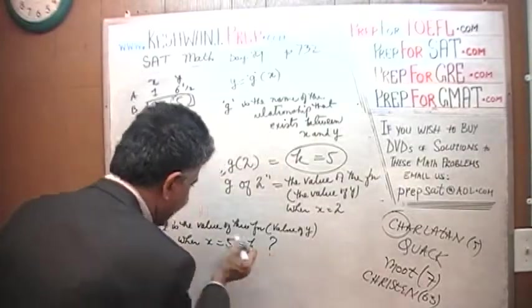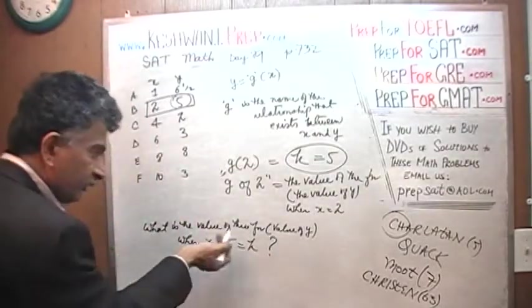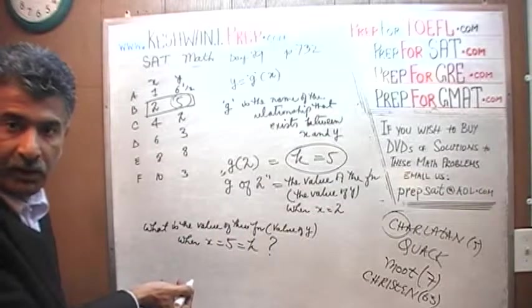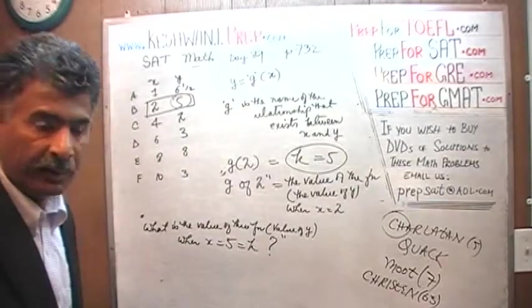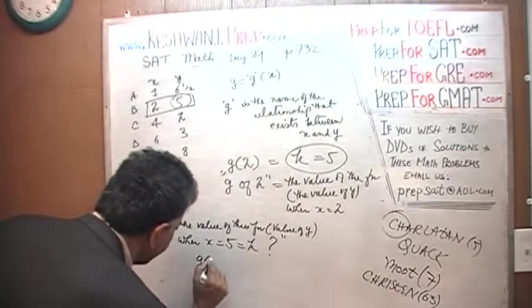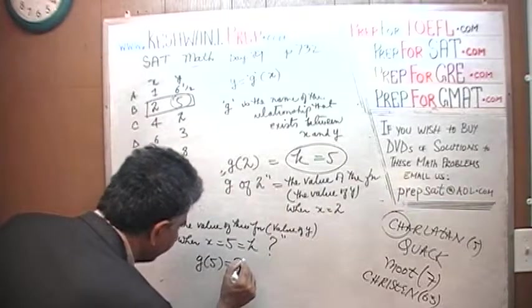Instead of writing it out in the English language, this is how we say it in English language. In the language of mathematics, this entire sentence would be written as G of 5 equals what? There you go.